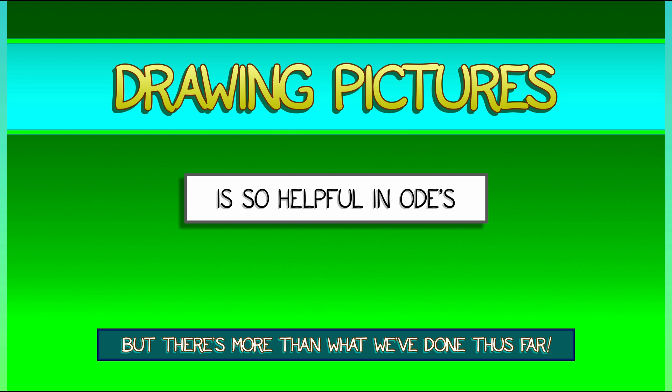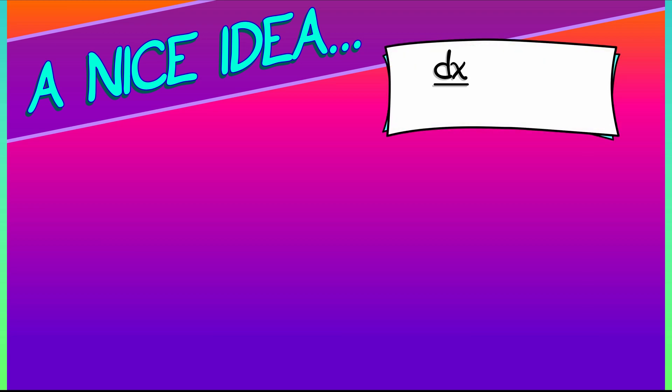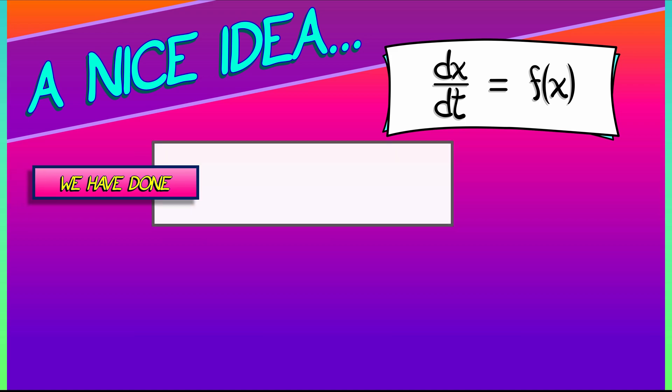Let's take a moment or two to talk about a really nice idea for drawing pictures associated with the differential equation dx dt equals f of x. So first-order autonomous. Really nice stuff. Now, what have we done so far?